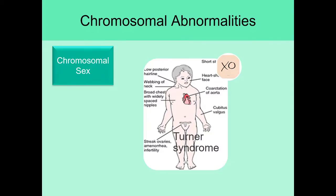People with Turner syndrome often have a heart-shaped face. They have hair that grows down lower on their neck, and webbing on their neck where it looks like their neck didn't fully emerge out of their shoulders. The biggest health concern is heart-related problems, including actual problems with the formation of the aorta.